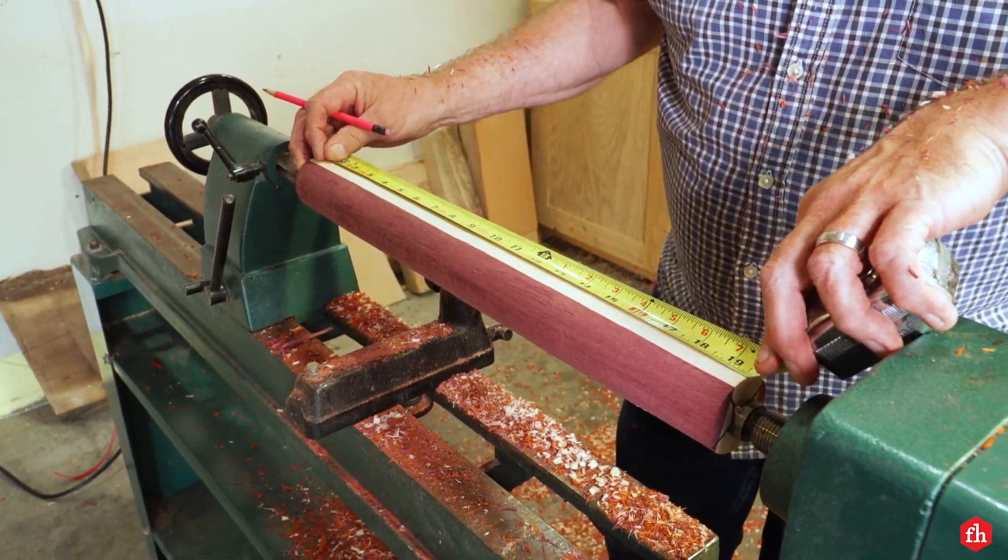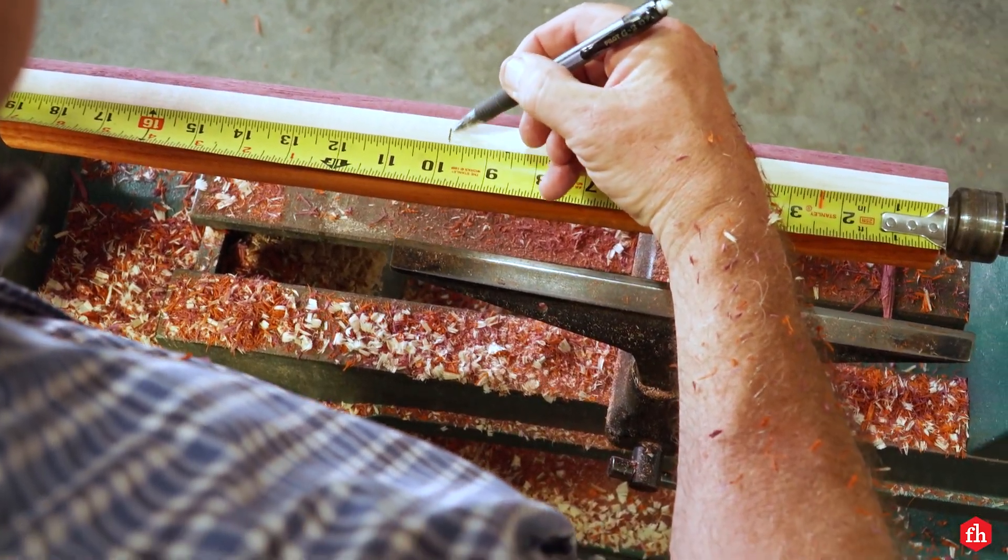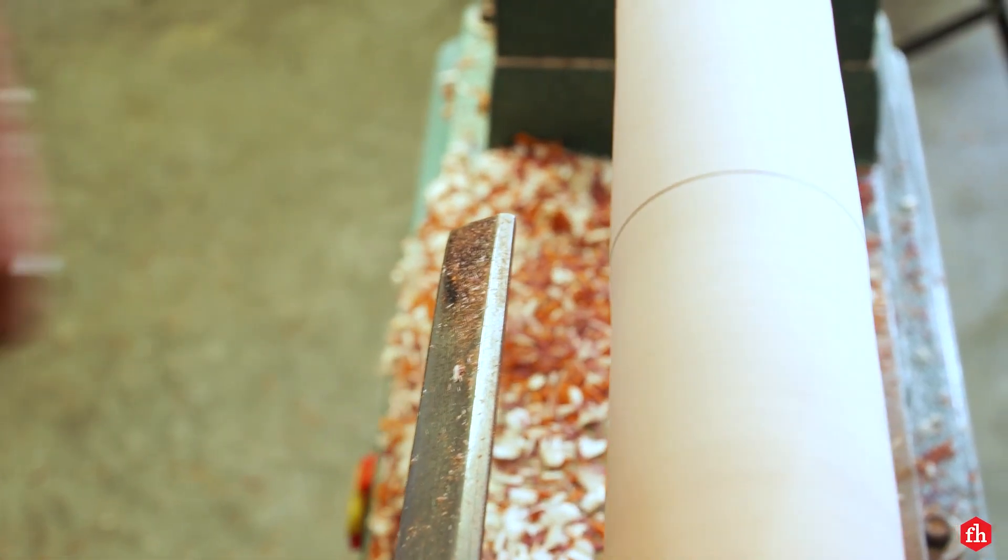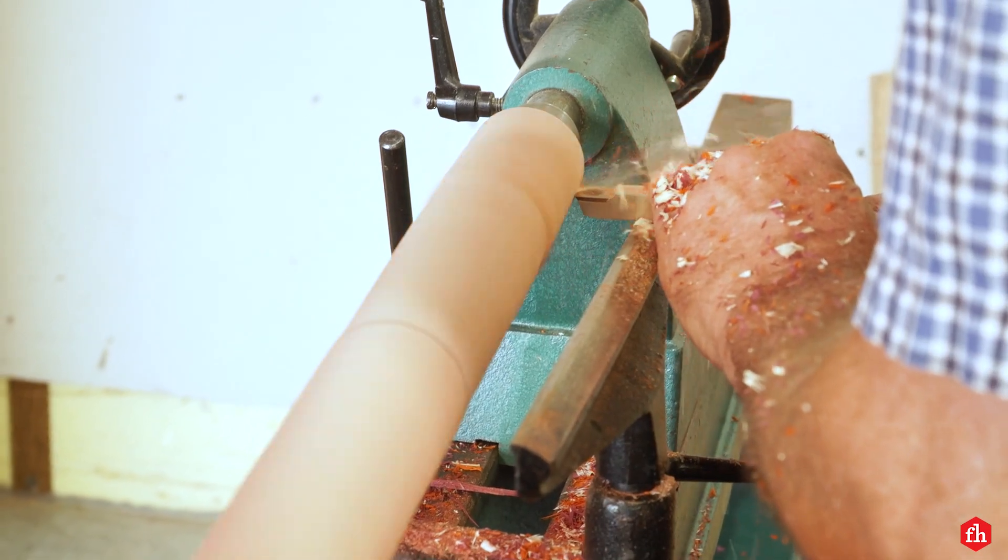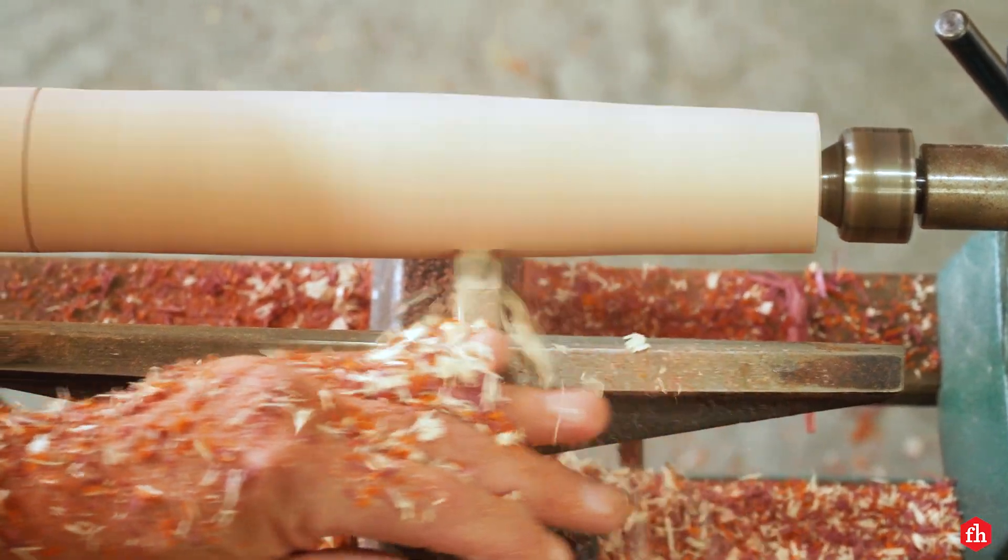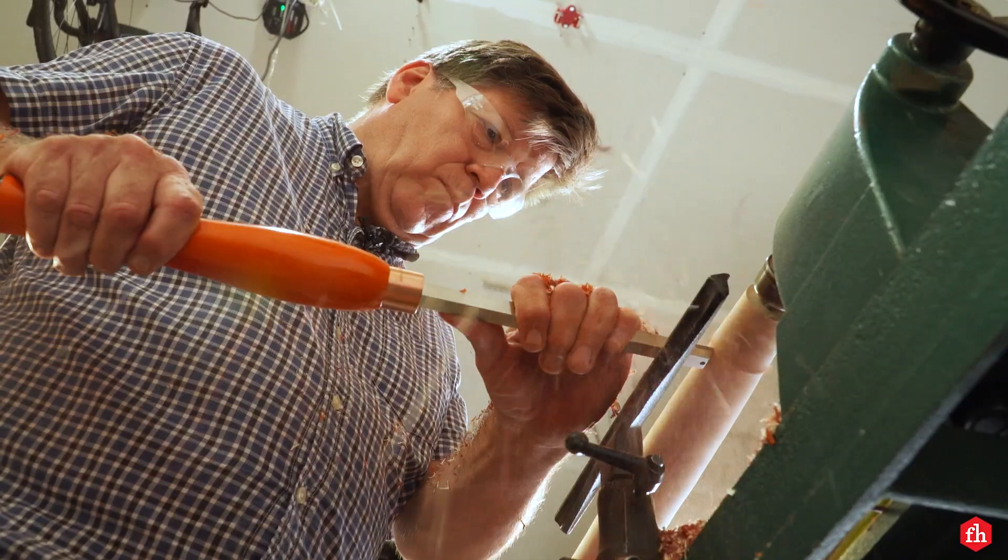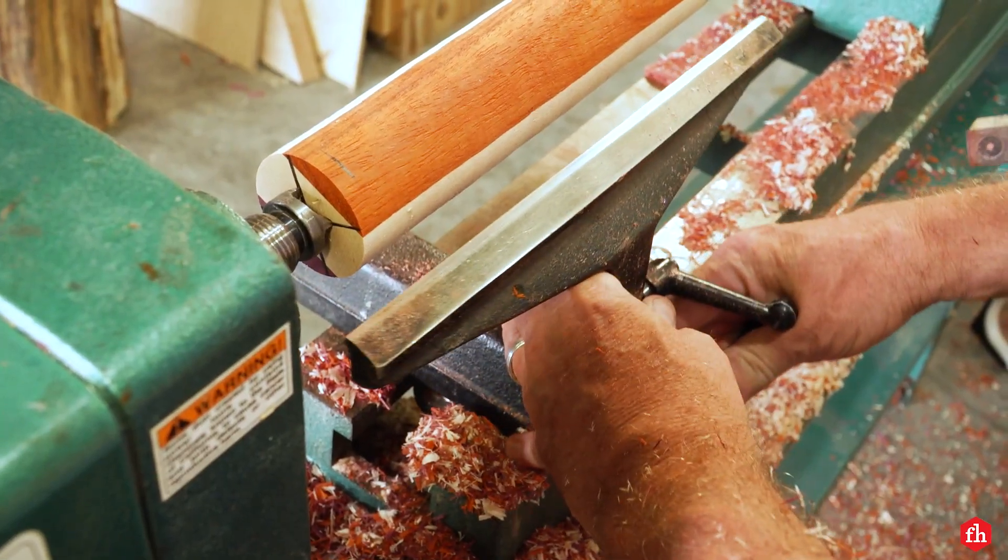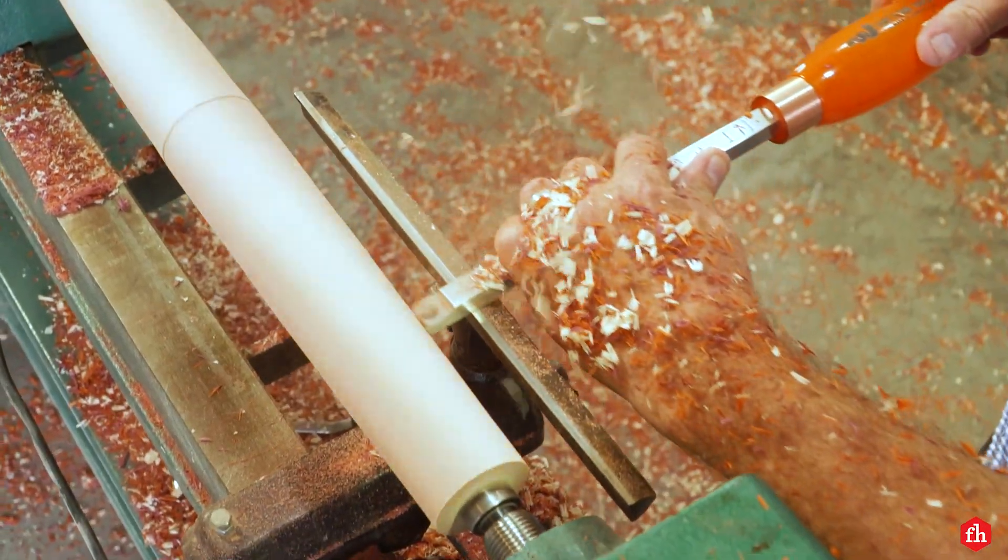Now that I have the block turned into a cylinder, I like to mark the center, then I work one half of the piece until it's the shape I'm looking for. Remember, this is a French rolling pin, so it tapers down on each end. Then I copy the dimensions to the other half until it's symmetrical.